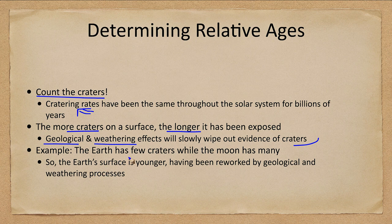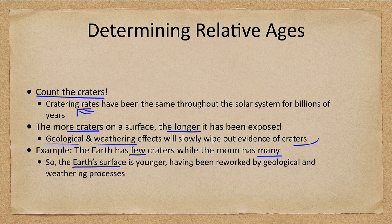Looking at an example: the Earth has very few craters; the moon has many craters. So the Earth's surface is younger — that does not mean that Earth is younger than the moon; they still formed at the same time. However, the Earth's surface is younger because it's been reworked by geological effects — earthquakes, volcanoes, plate movements — and by weathering processes: wind, rain, and ice.